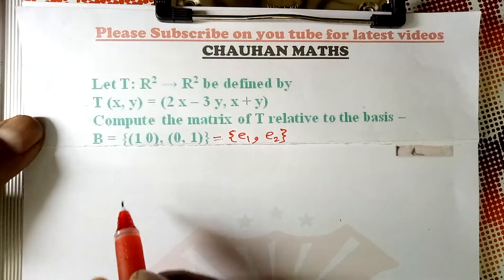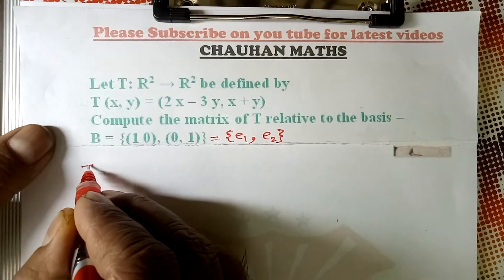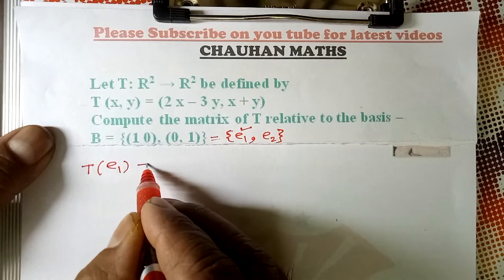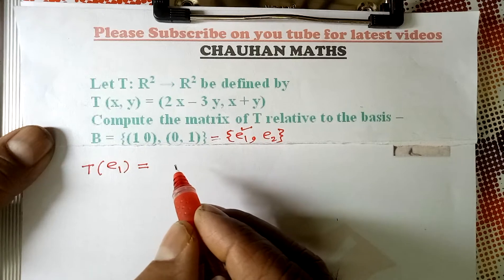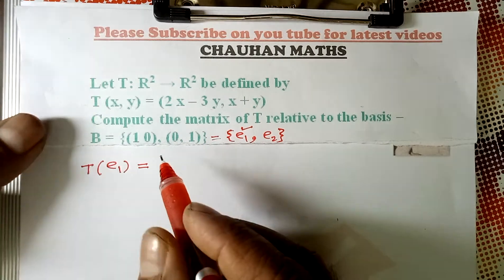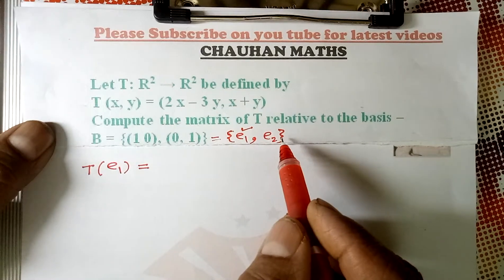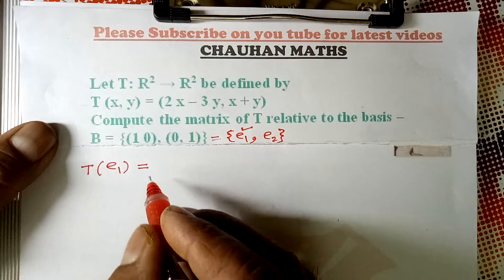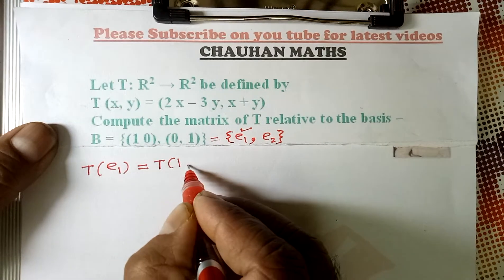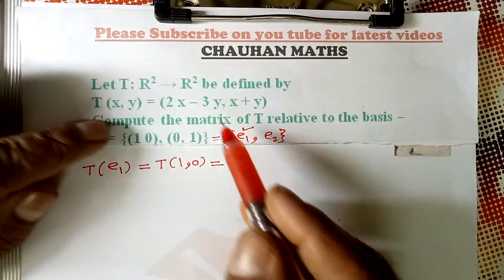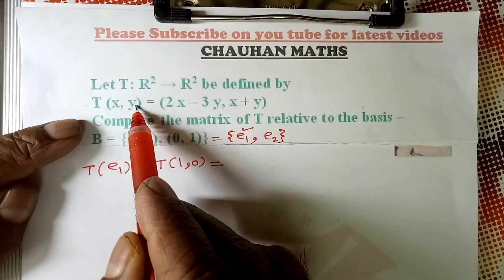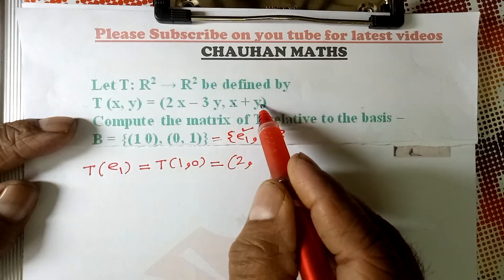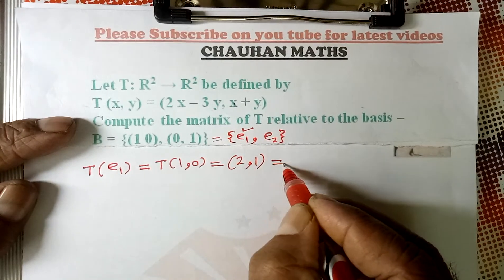T of E1 means T of (1, 0). T of (1, 0) can be found from the definition. With x=1, y=0, we get 2(1) minus 3(0) = 2, and x plus y = 1 plus 0 = 1. So T(E1) = (2, 1).